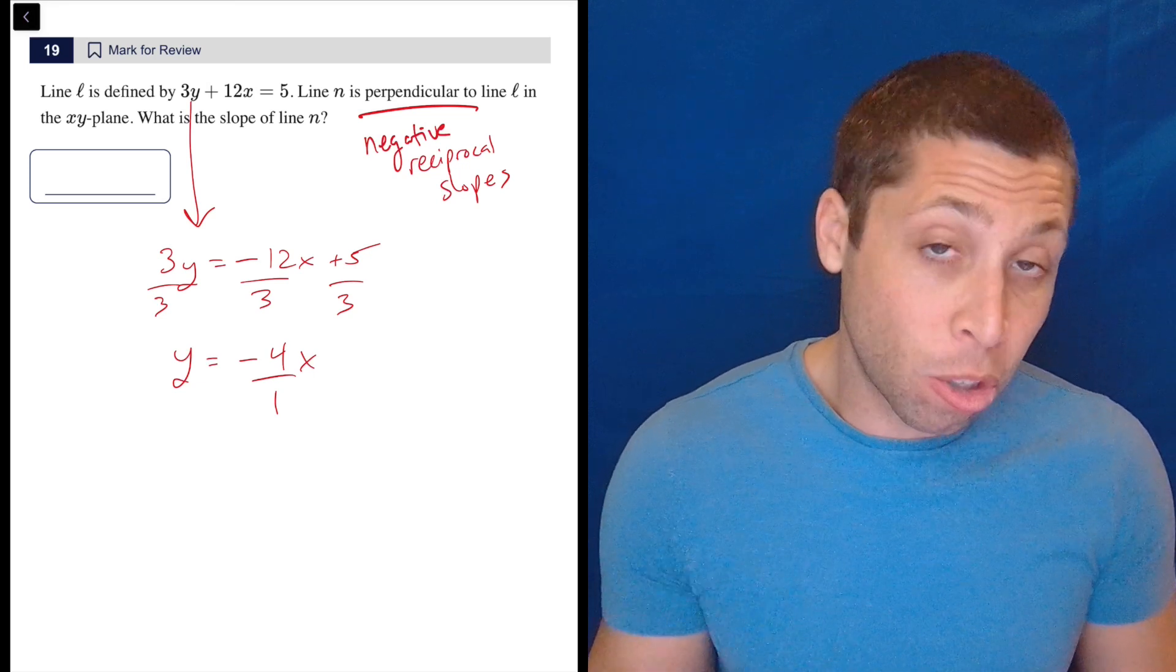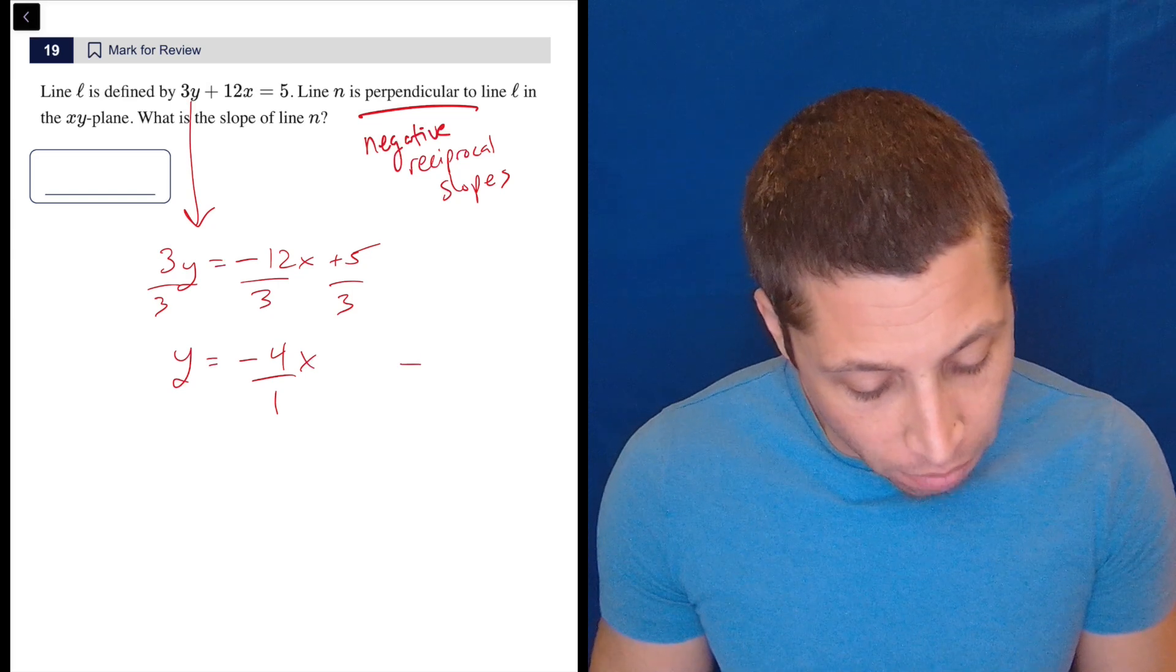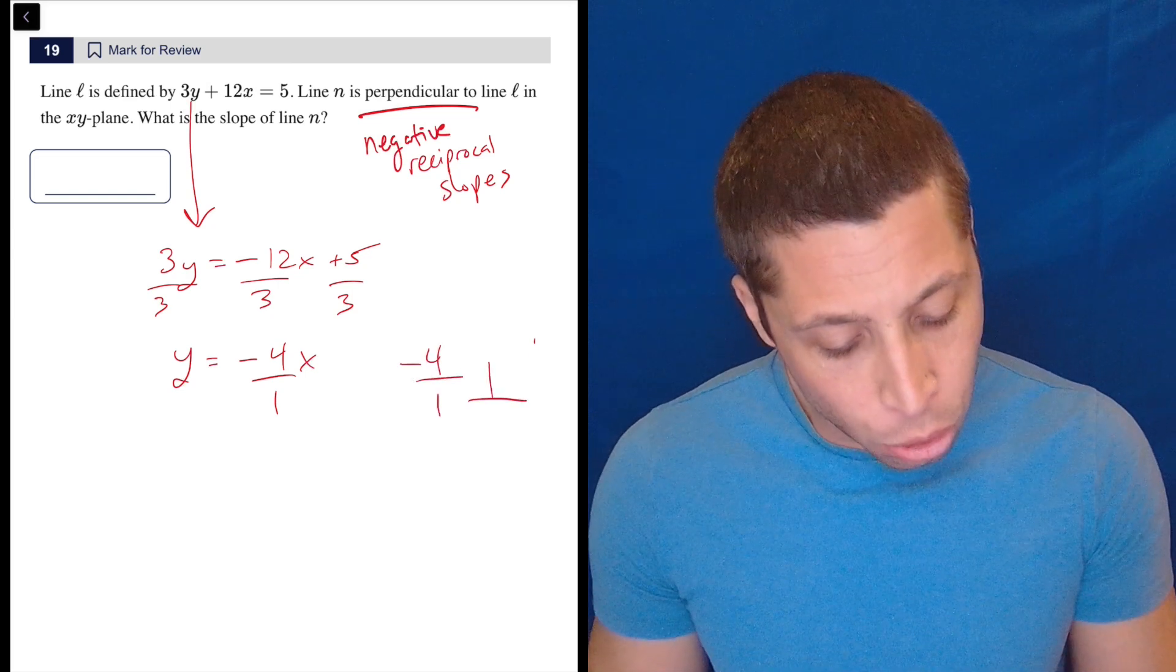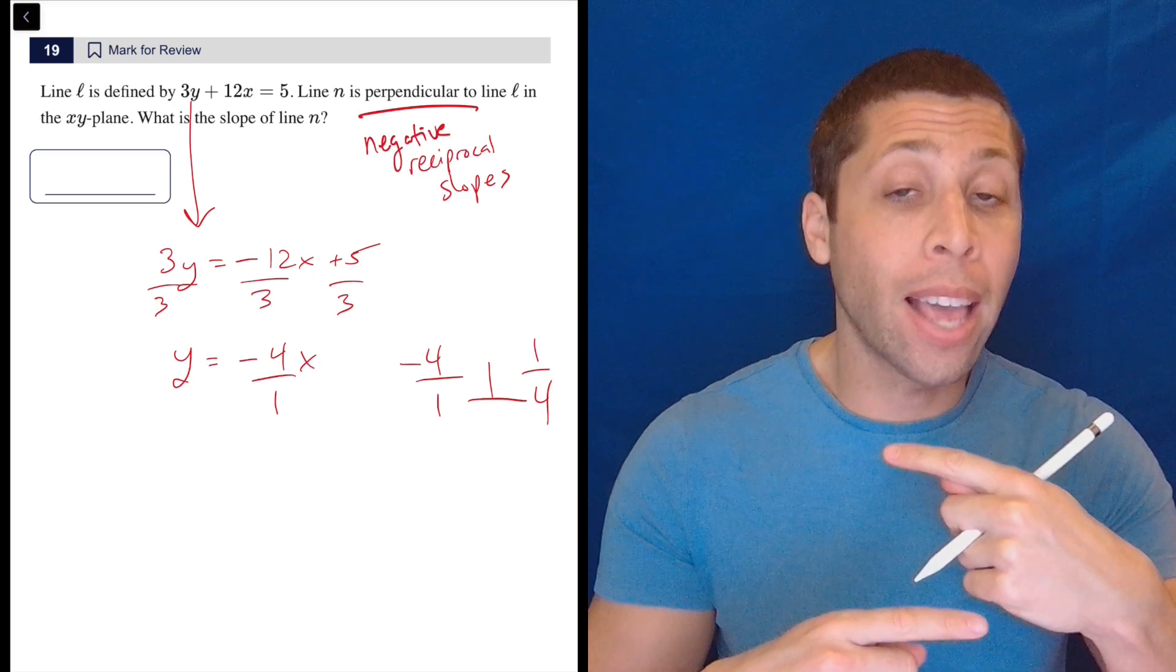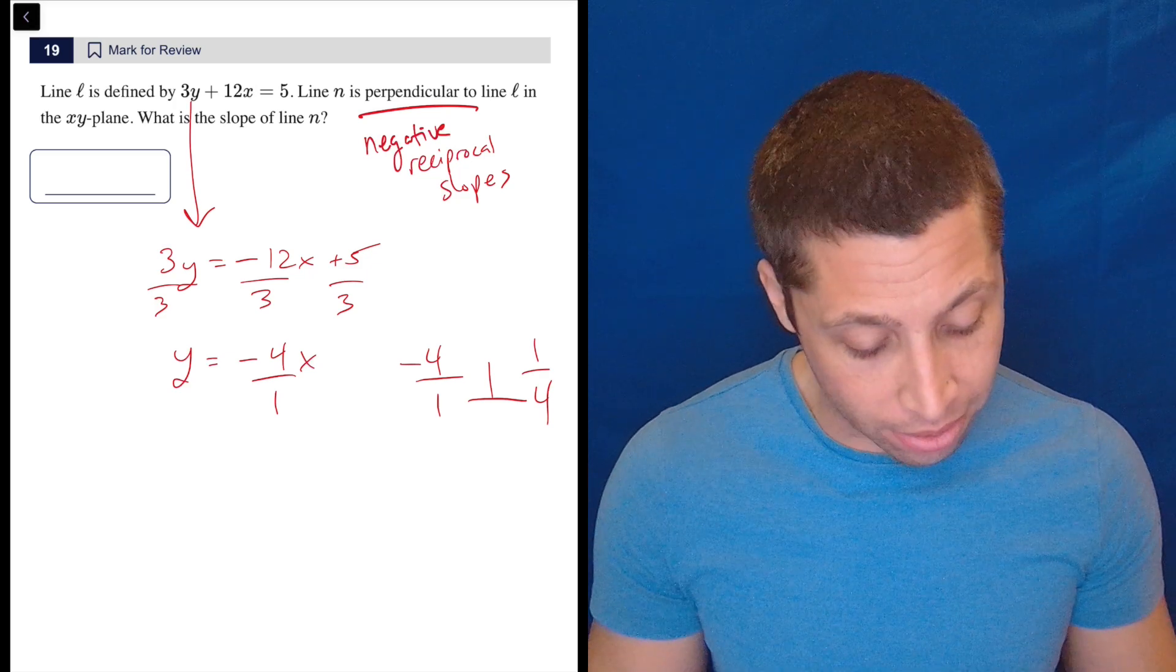We want line N, which is perpendicular to that. So the slope of negative 4 over 1 is perpendicular to 1 over 4. Negative reciprocal slopes. Flip the sign and flip the fraction. So both things get flipped.